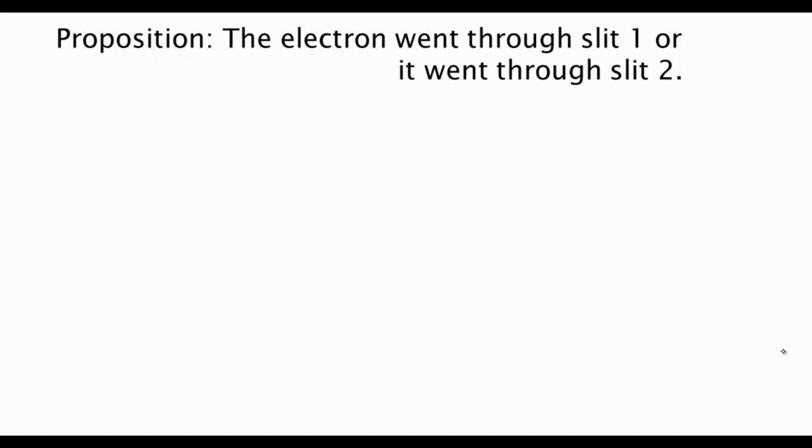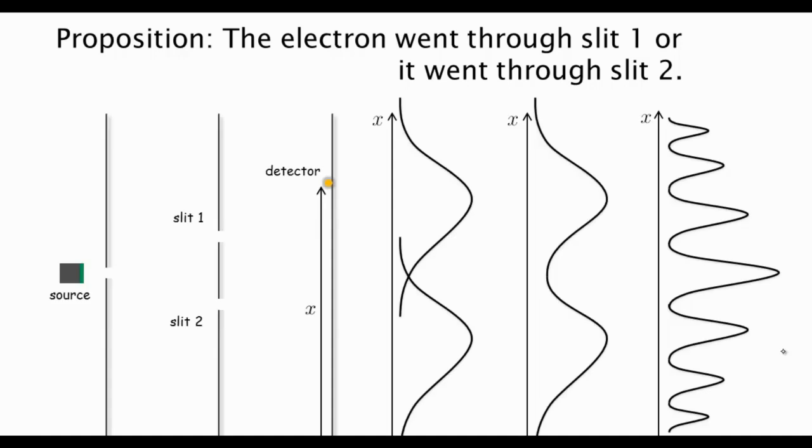If it arrived at x, it started from the source, it must have either taken this path or that path. Obviously, if that were the case, then we should not have seen the interference pattern. So this proposition is obviously false, but let's try to investigate it a little further by designing an experiment to see where it went wrong.